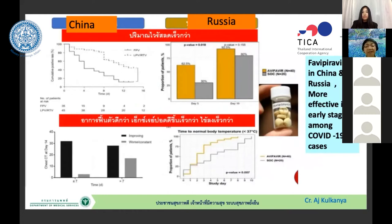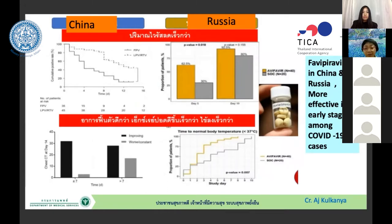We obtained favipiravir from China. Studies showed favipiravir was more effective in early-stage COVID-19. We found it very helpful in our cases. Favipiravir is now the first-line drug of choice in Thailand for COVID-19 treatment, but it is not used as a single drug — we use it in combination.